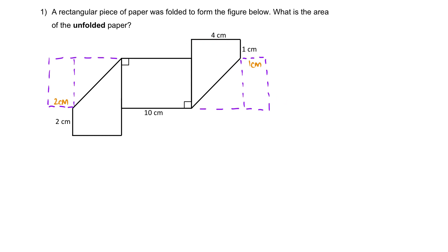Once you unfold it, this 4 cm will come down to here, so this is 4 cm. The same thing applies: this is 4 cm, and this must also be 4 cm. This 1 cm will come down here to form 1 cm. We still have this segment here — this is also the breadth, so this must also be 4 cm. Now we have the length components: 2, 4, 10, 4, 1.